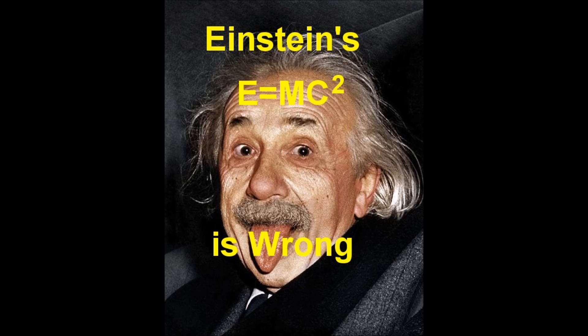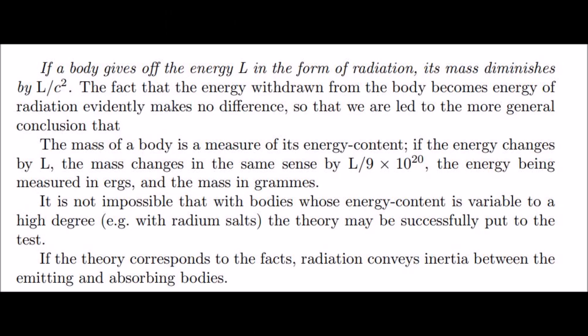Einstein's E equals mc squared is wrong. What is interesting is that Einstein's famous E equals mc squared is actually missing in his famous paper of September 27, 1905. It is merely implied and, as we shall see, wrongly.